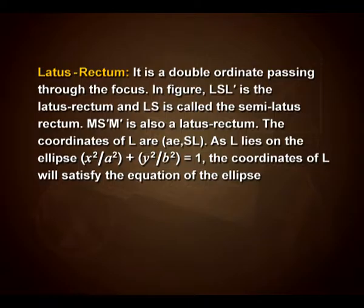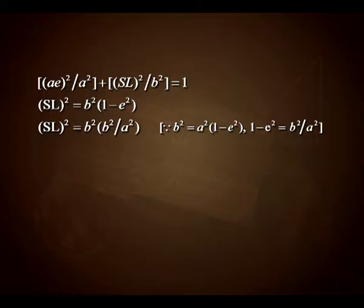The coordinates of L are (ae, SL), as L lies on the ellipse x²/a² + y²/b² = 1. The coordinates of L will satisfy the equation of the ellipse, that is (ae)²/a² + SL²/b² = 1. So, SL² = b²(1 − e²), which can be written as SL² = b² × (b²/a²).